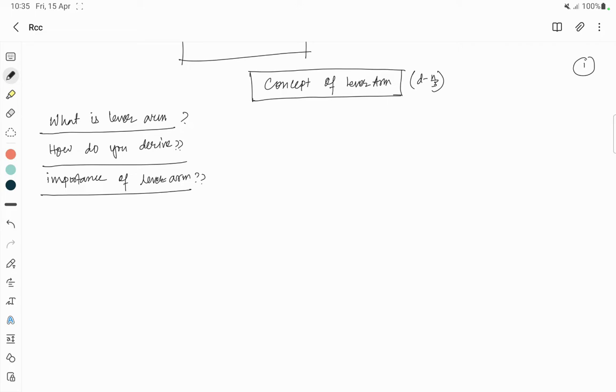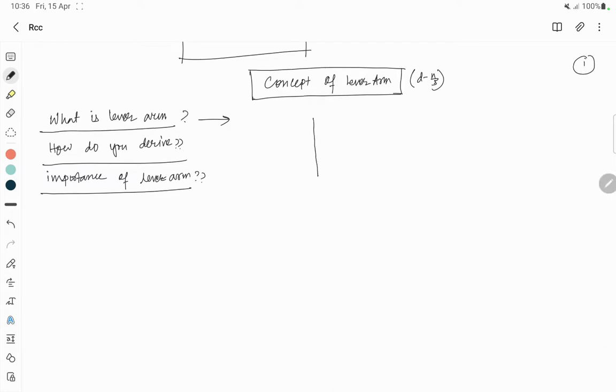So without further delay, let's get started. First, we talk about what is the lever arm. Basically, this lever arm is a perpendicular distance. Now the question is, perpendicular of which? Perpendicular to the line of action of force. So this is your 90 degrees. So now it is clear why we talk about perpendicular distance.